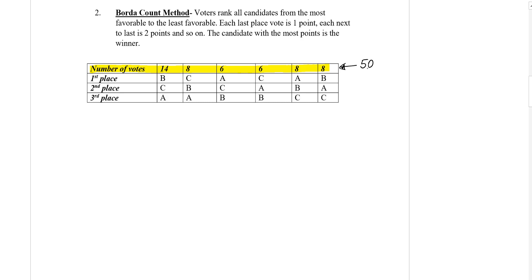Now what else we have? We have the first place. On the first place we have, if we are using the same people as before, we have Bob with 14 votes, Charlie with 8 votes, Anne with 6 votes, Charlie with 6 votes, and so on.